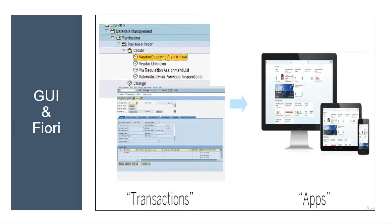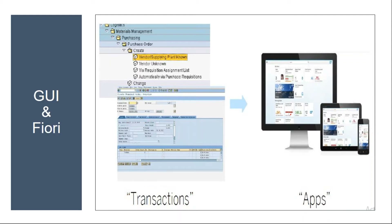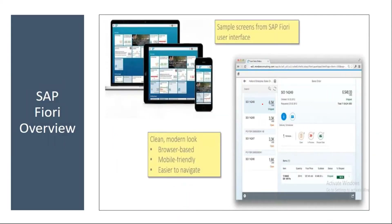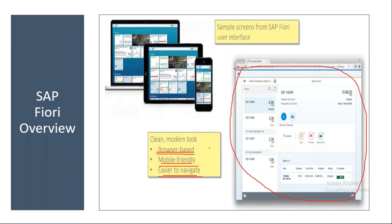In the traditional GUI we use transactions, whereas in Fiori we use apps. Fiori can be accessed from any device — mobile phone, smartphone, tablet, laptop, or computer. The sample Fiori screen is browser-based and mobile-friendly. It is very easy to navigate compared to GUI — I will show this in the system.